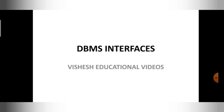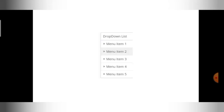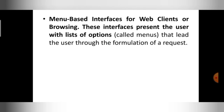Let me begin the explanation of DBMS interfaces. The first type is the menu-based interface. In a menu-based interface there will be a list containing different types of menus — for example, menu item one, menu item two, menu item three — these can be called drop-down menus. This type of interface is used for web-related clients for browsing.